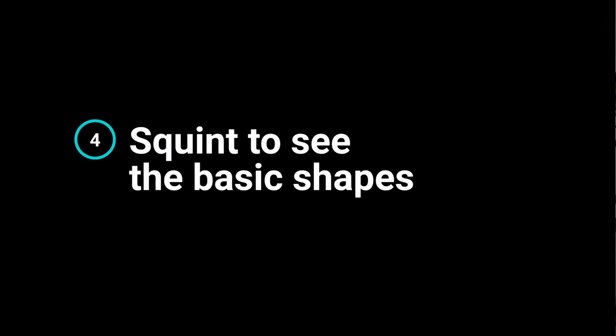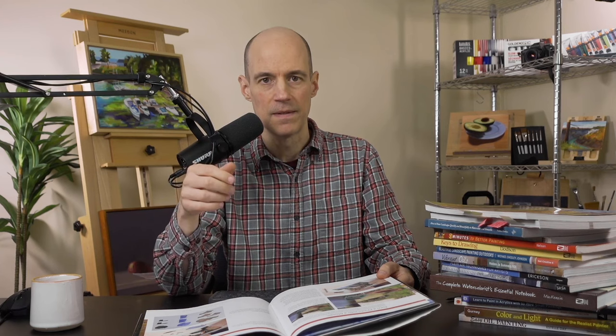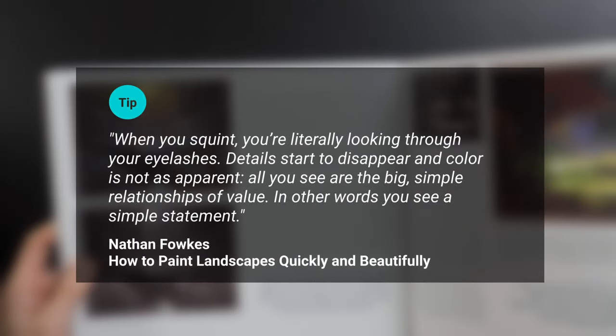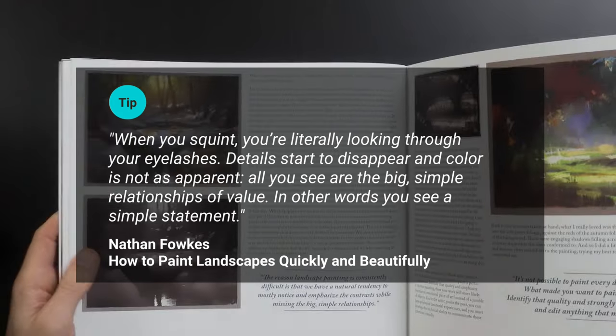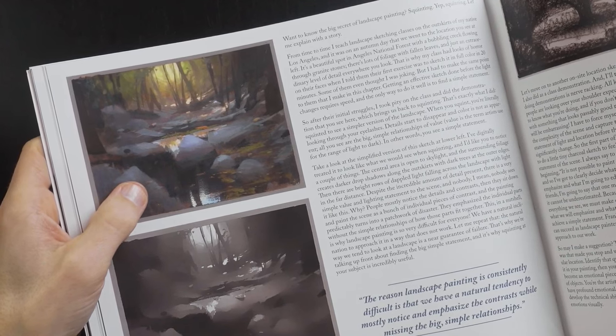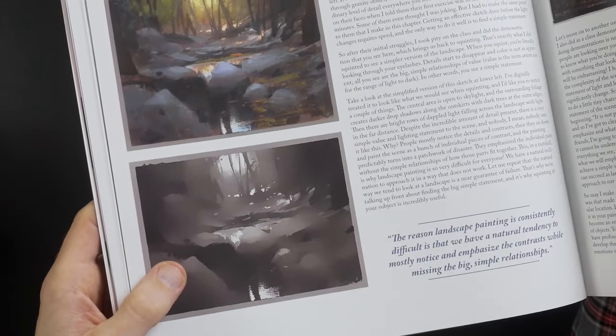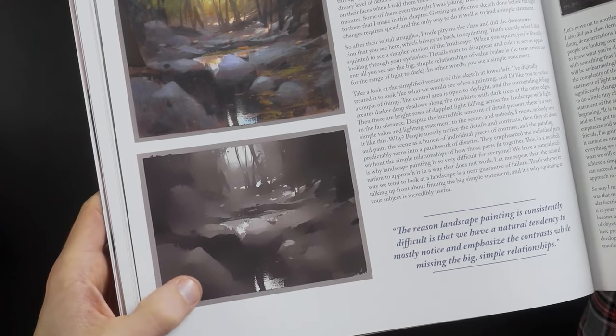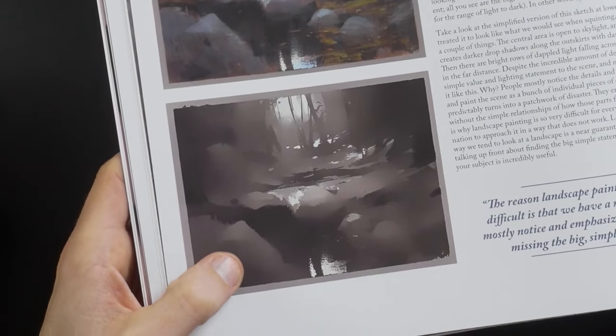But you might be wondering how you do this when you're on site without a computer to blur the photograph. That leads to the next tip: squint when you look at the scene. Squinting simplifies everything into basic shapes and eliminates all surface detail. As McPherson says, 'When you squint, you're literally looking through your eyelashes. Details start to disappear and color is not apparent. All you see are the big, simple relationships of value — a simple statement.' In this painting demonstration at the top, he completed it within 20 minutes. The bottom image is a digital rendering of what it looks like when you squint — all the detail gets eliminated and you only see the large patterns, making it much easier to paint a complicated scene.